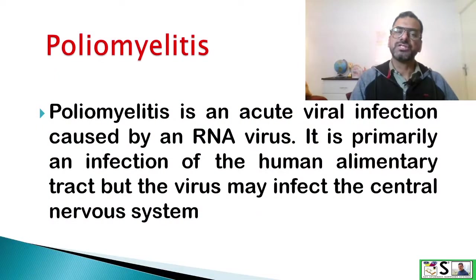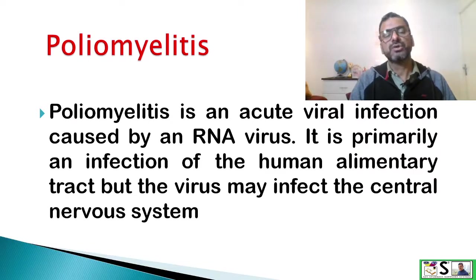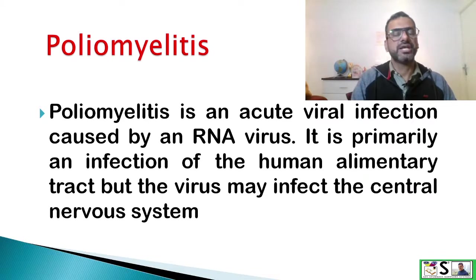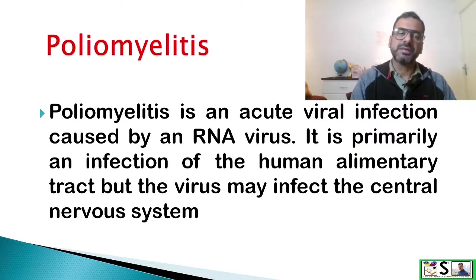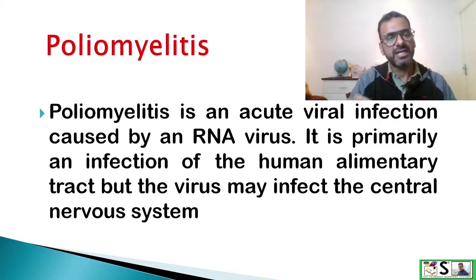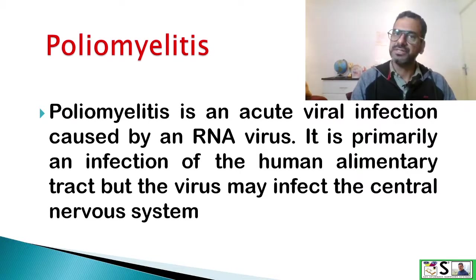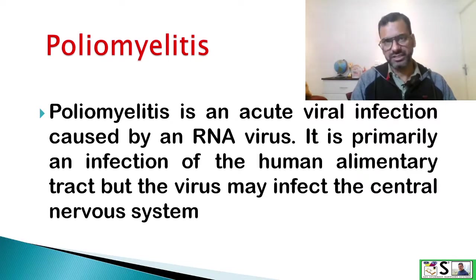What is poliomyelitis? Poliomyelitis is commonly known as polio disease. This is an acute viral infection caused by an RNA virus. It is primarily the infection of the human alimentary tract, or we can say GIT, but the virus may also affect the central nervous system.